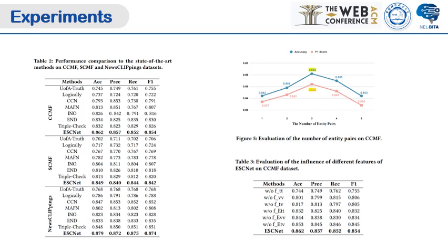In Table 2, we can observe that the proposed EICnet achieves the best performance of 80.62%, 80.49%, and 80.79% accuracy respectively on three datasets: CCMF, SCMF, and NUSCLIM.